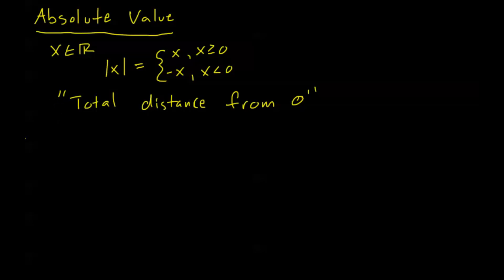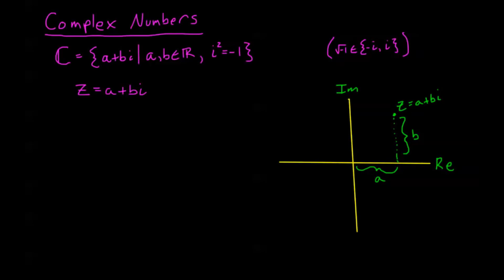Now I'm going to do a little aside here. We talked earlier about the complex numbers. You'll notice I said for x in the real numbers, we define the absolute value in this way. Now for x in the complex numbers, it's a little bit different. The absolute value of a complex number we call the modulus. I'm going to denote it the same way, but this is called the modulus of the complex number z.